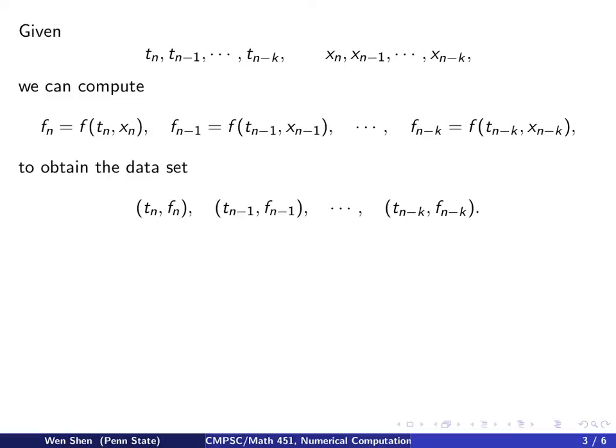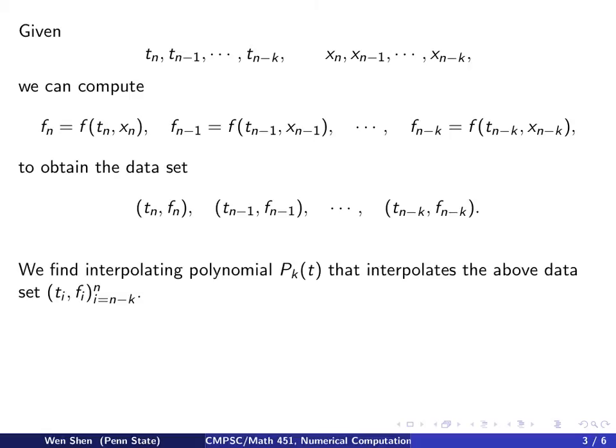So this gives us a set of data points at index n, n minus 1, all the way to index n minus k. So in fact, we have actually k plus 1 points. Now, recall what we have learned in polynomial interpolation: k plus 1 points, we can interpolate uniquely using a polynomial of degree k.